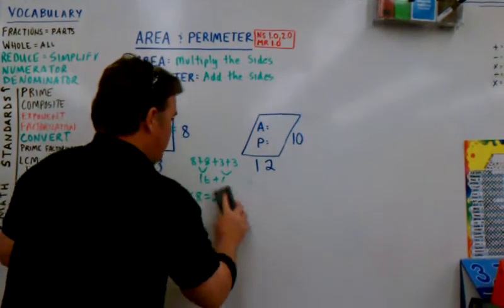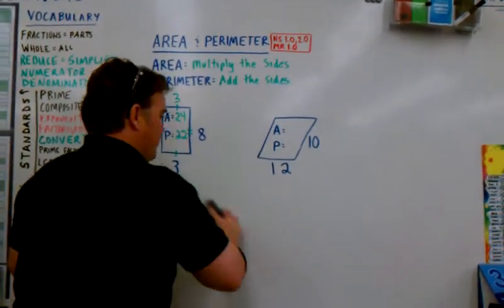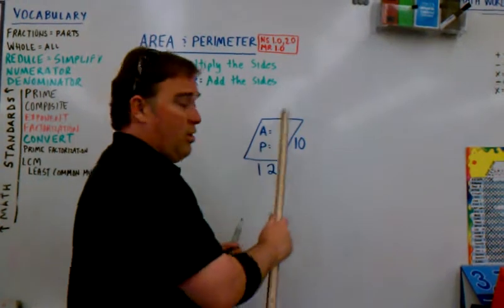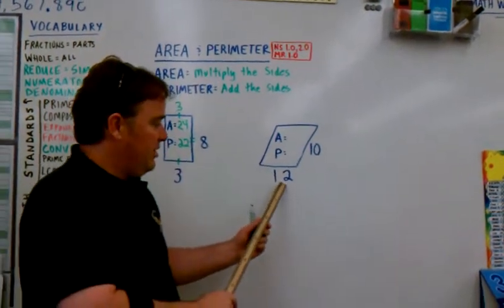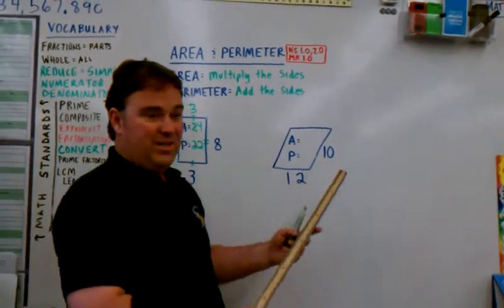Let's do one more. Let's erase our work. Get a clean surface going here. Okay, we have another quadrilateral. One side is twelve. One side is ten.